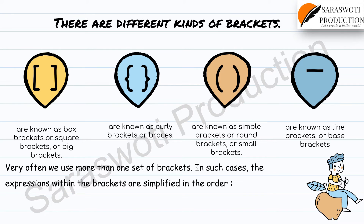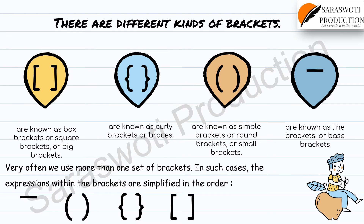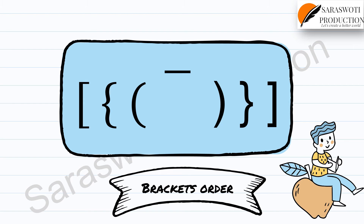Very often we use more than one set of brackets. In such cases, the expressions within brackets are simplified in order: first the line bracket, then the simple bracket, third the curly bracket, and last the square bracket. Whatever operation is inside the innermost bracket is solved first.